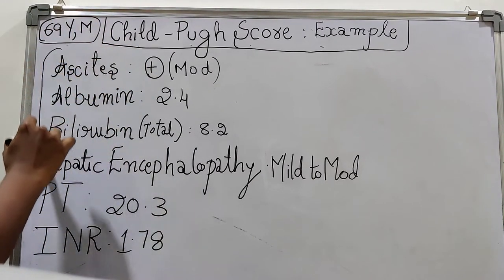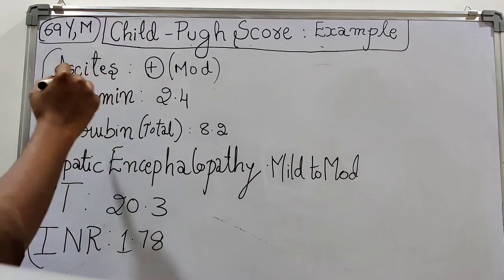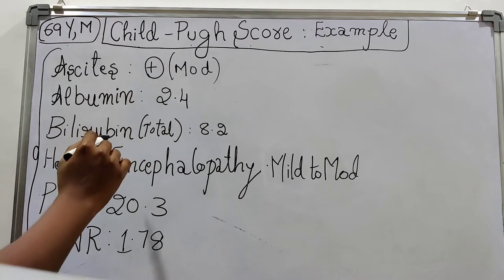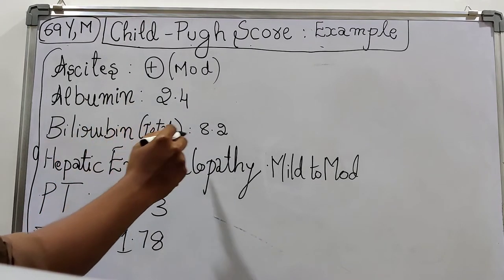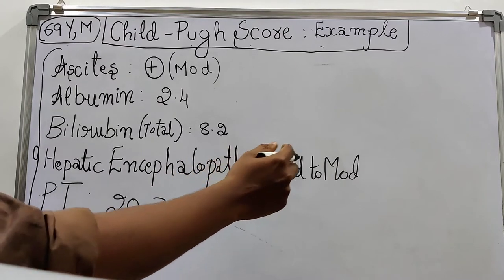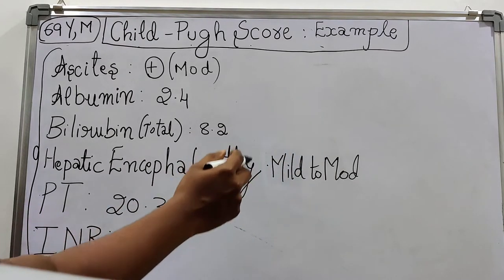Ascites was mild to moderate. Albumin was 2.4. Bilirubin, that is total bilirubin, was 8.2. Patient was having hepatic encephalopathy in the mild to moderate range with symptoms of delirium and other symptoms.